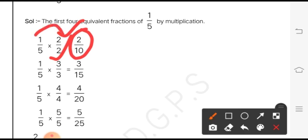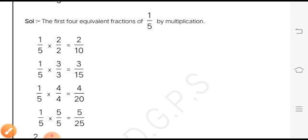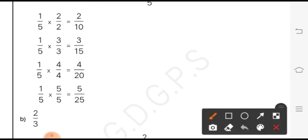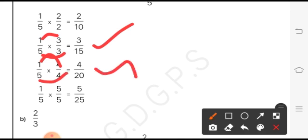Numerator is to be multiplied by numerator and denominator by denominator. So 1 into 2 is 2, and 2 into 5 is 10. Likewise, 1/5 is multiplied by 3, and you can observe 3 ones are 3 and 3 fives are 15. 1 four is 4, 5 fours are 20. 1 five is 5, 5 fives are 25.